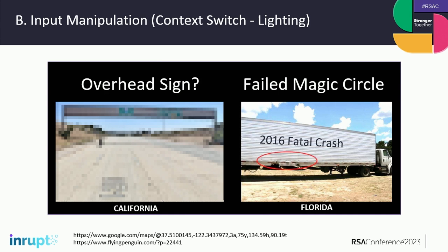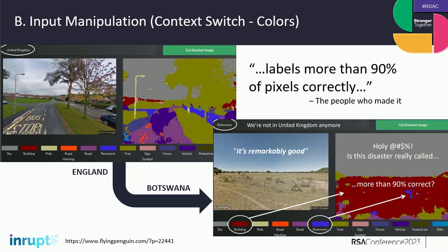I did research in 2016 and I've since become more extreme in my description because I think I was even more right than I thought. In 2016 I took driverless tests from England showing 90% pixel accuracy in identifying trees, road, and asphalt — and I moved it to Botswana and immediately defeated the system. They were doing color-by-number, so if I switch the context of colors — grass is tan instead of green — the system thought it was a building. How trivial is that? These machines are sadly vulnerable and overconfident.